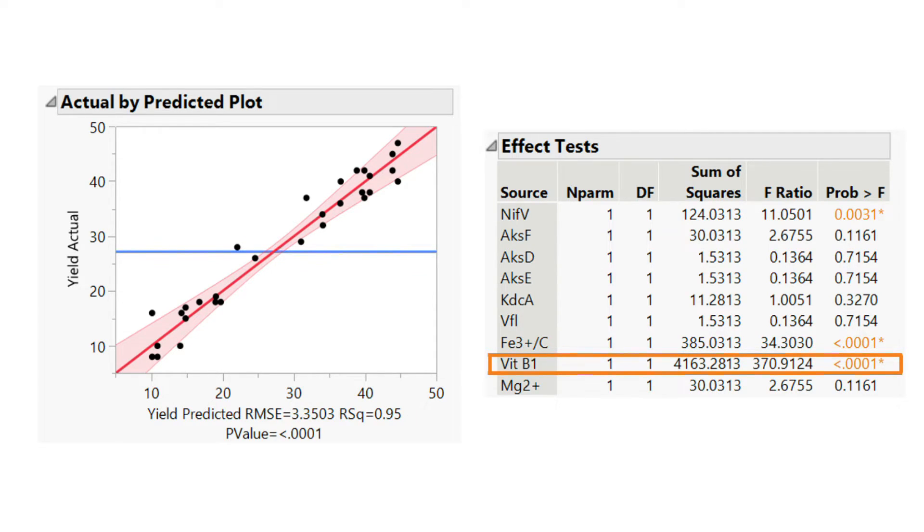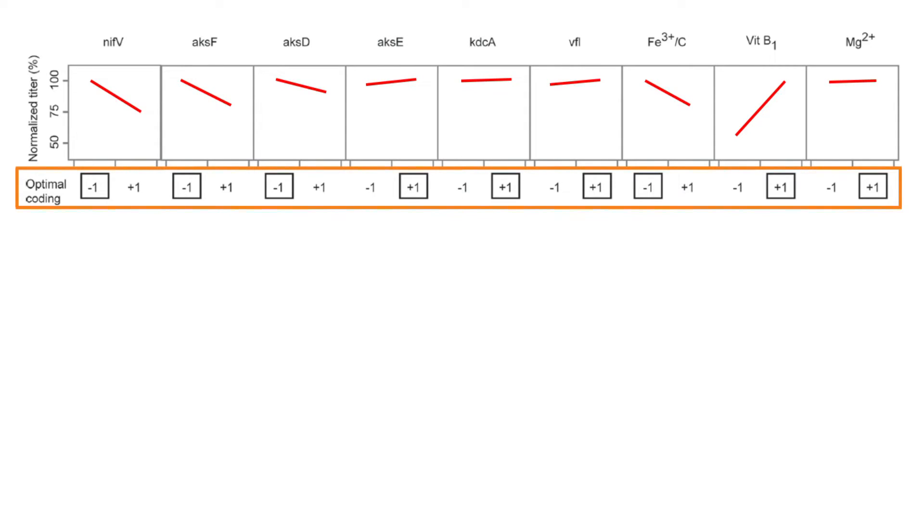Furthermore, the regression model predicts a genetic system and media composition that is optimal for 6-amino caproic acid production shown under optimal coding.